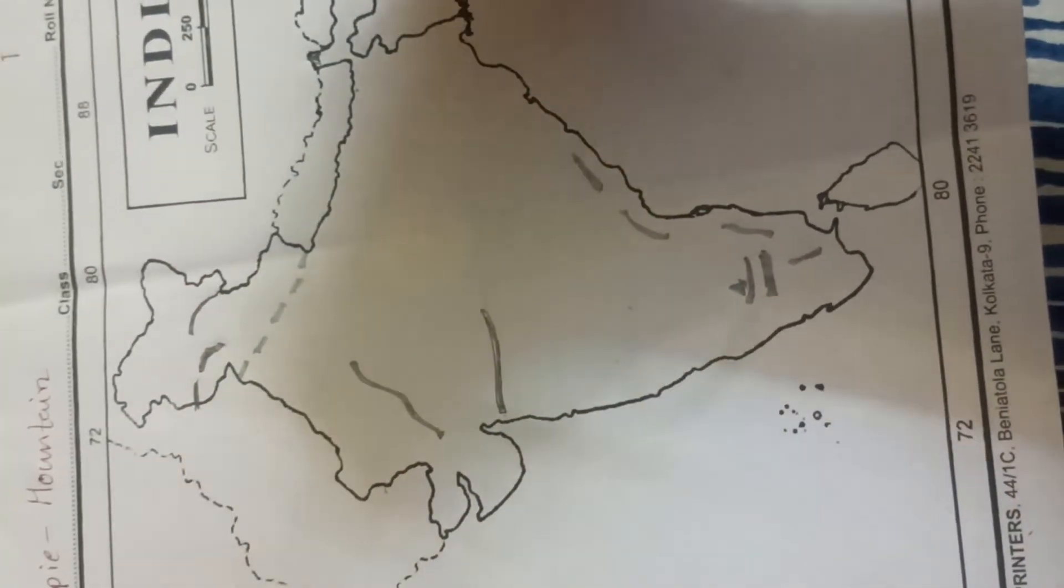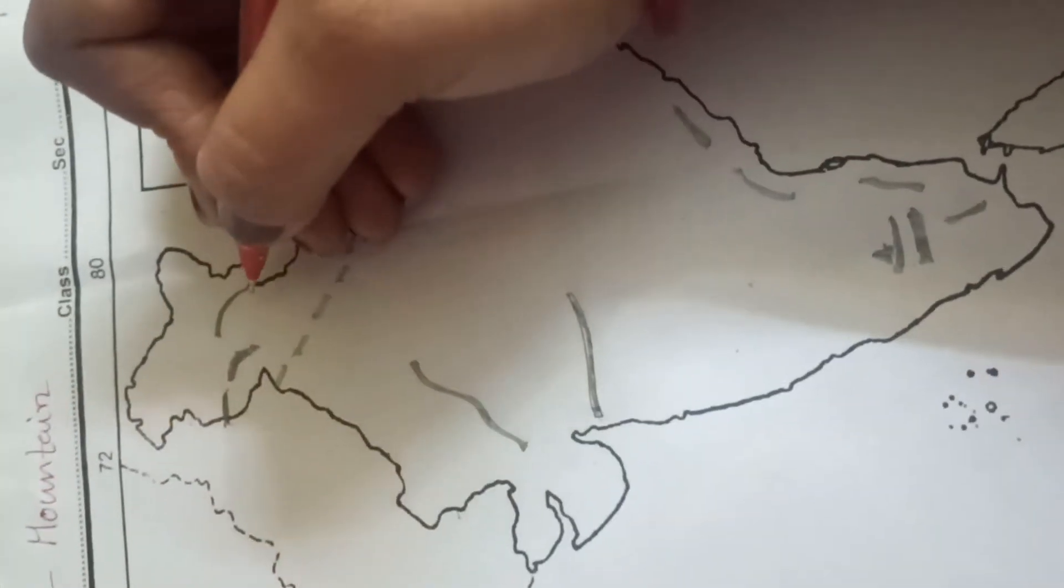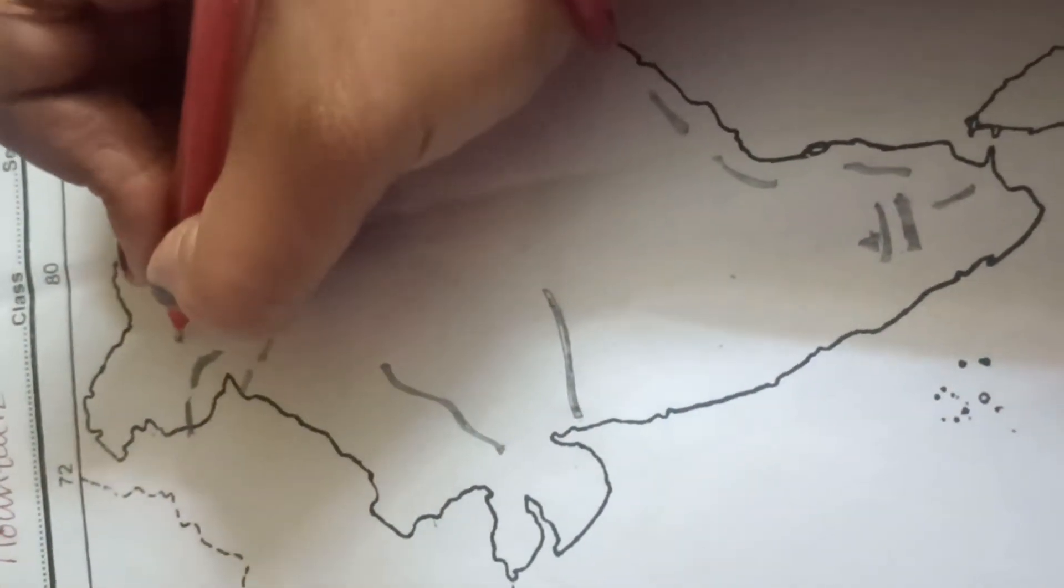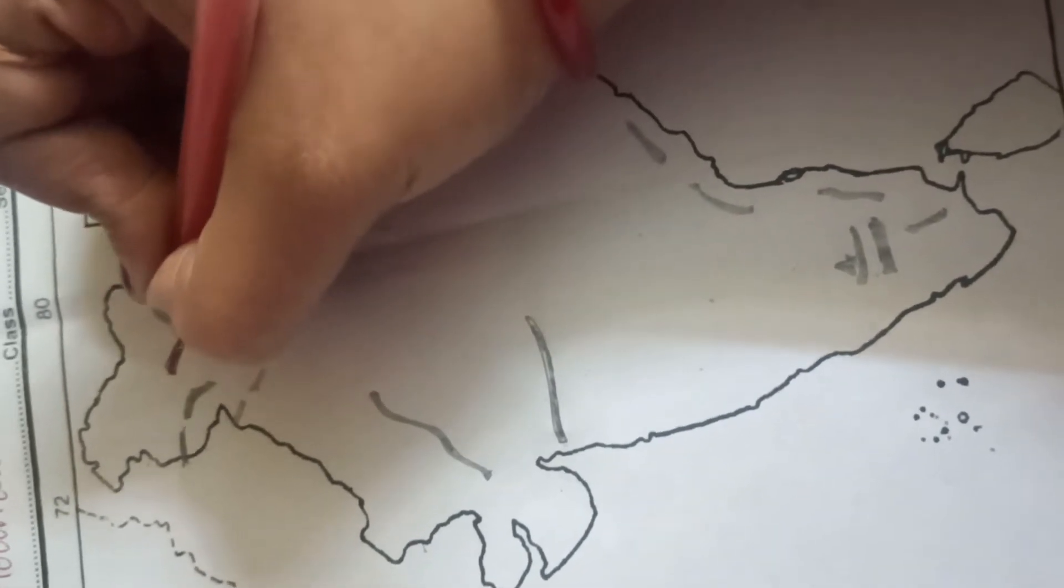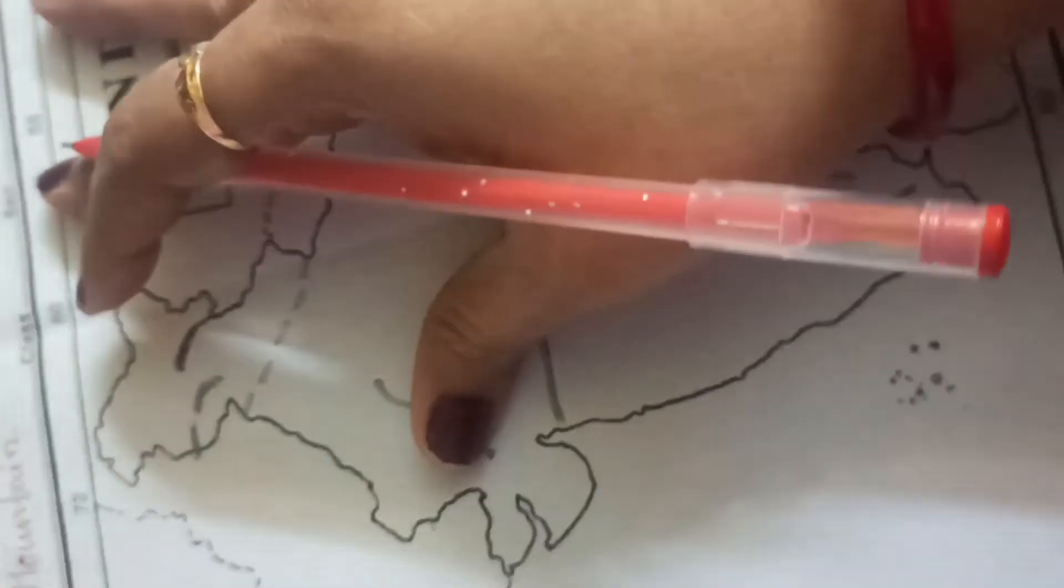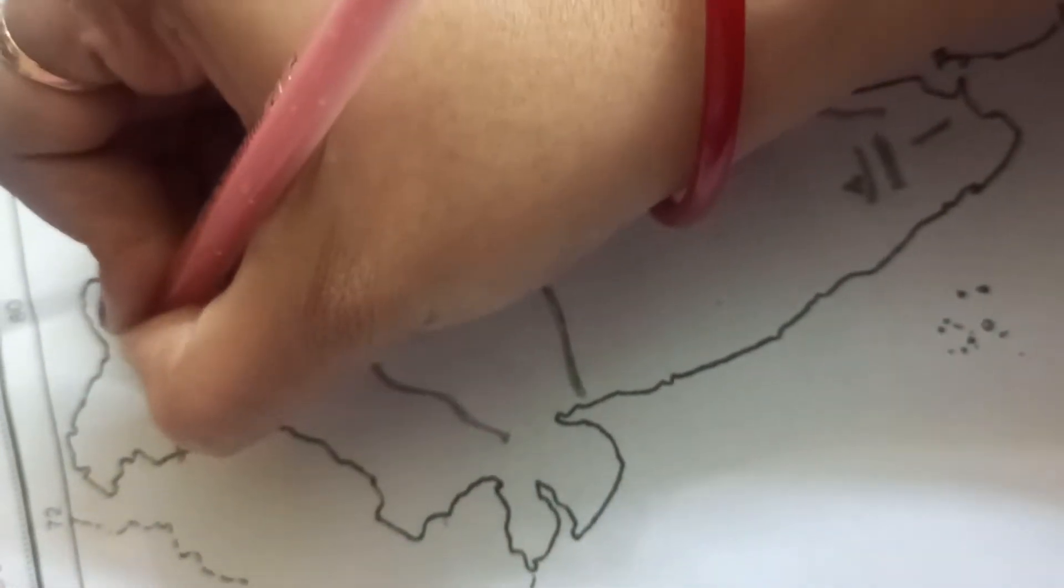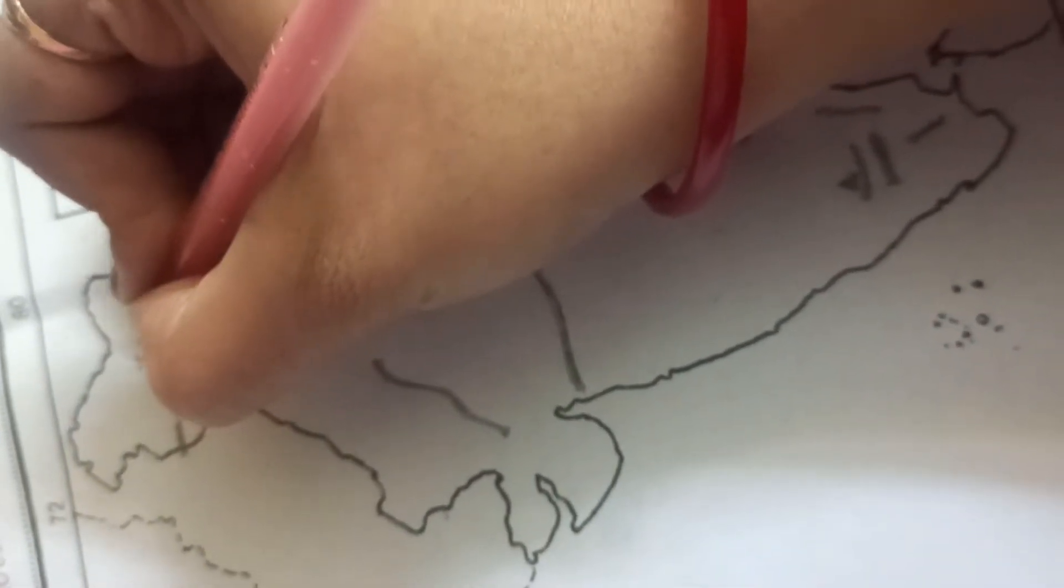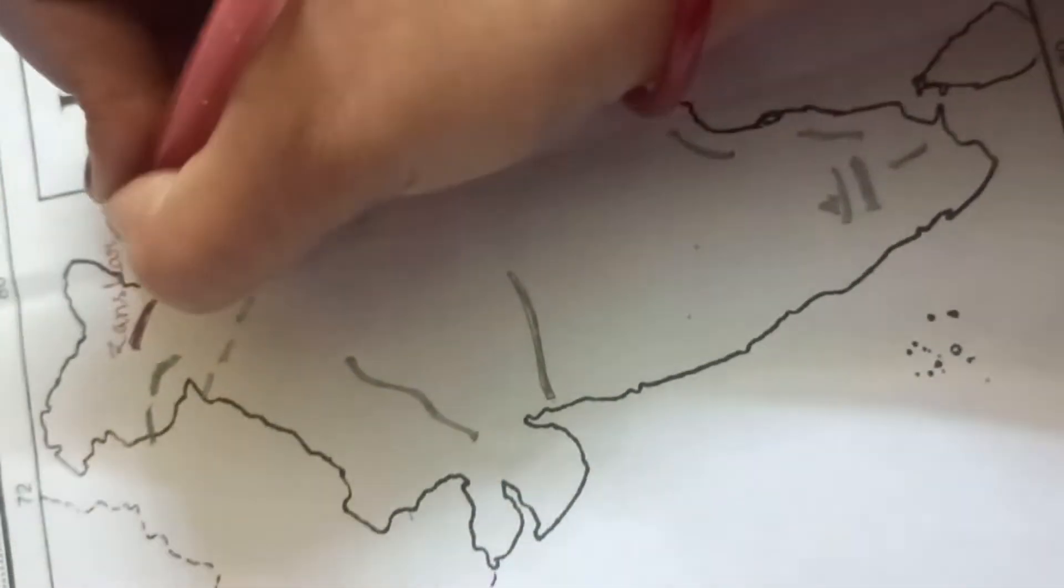So now we will do the map pointing. First, here this point, this mountain range is known as Zanskar mountain range. Okay. Now write down Zanskar mountain range: Z-A-N-S-K-A-R.